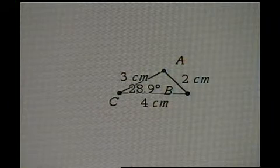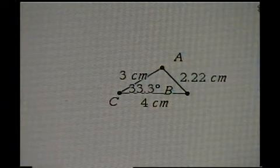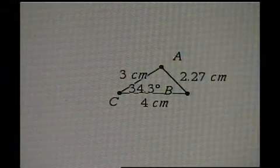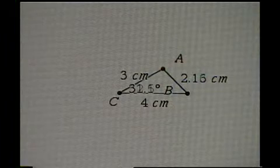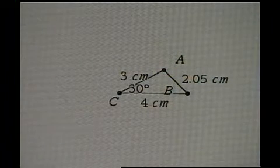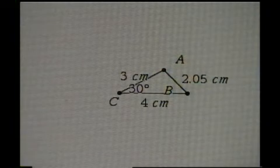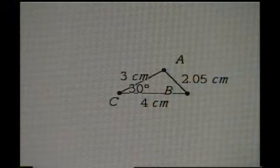Let's go to a familiar angle now — a nice round number. We'll call it 30 degrees. You can see the angle C: there's 30 degrees. And the resultant side C is 2.05. So I'll enter 2.05 in the table.